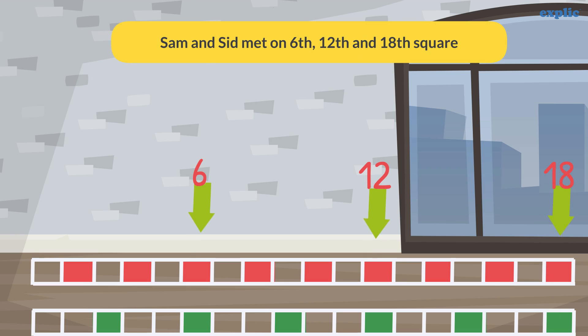As we saw, Sam and Sid are meeting at the 6th, 12th, and 18th square.